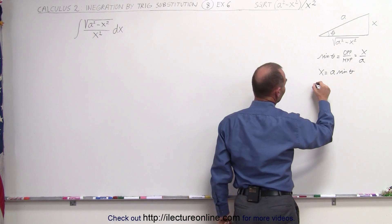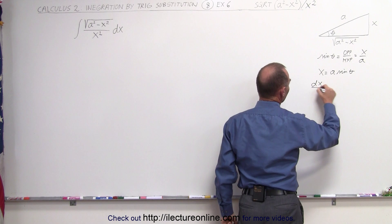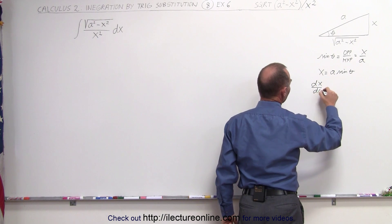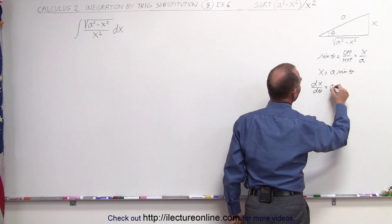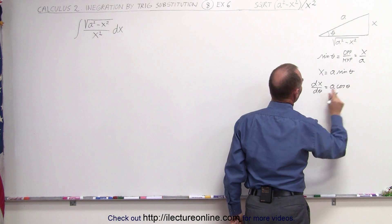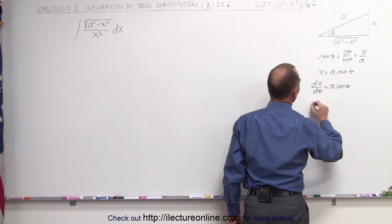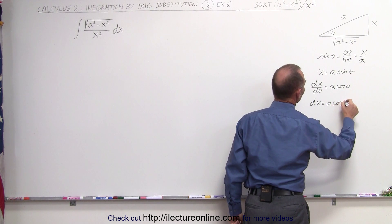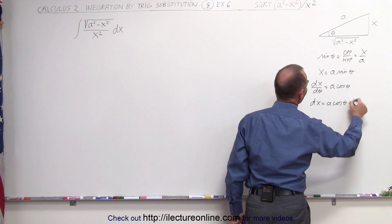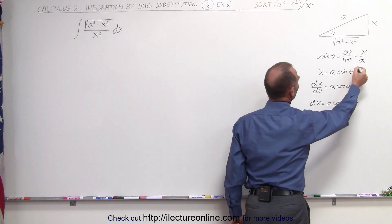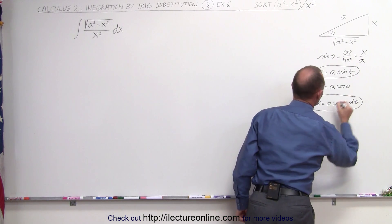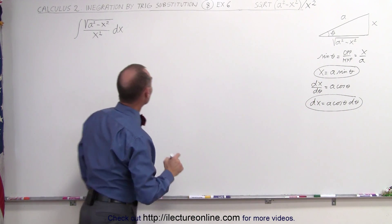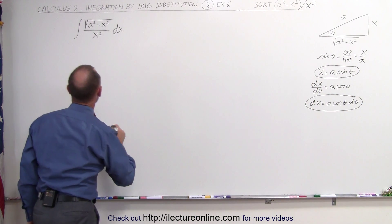We also have a dx, and so therefore dx divided by d theta is equal to a times the cosine of theta. Moving the d theta over, we can now write dx as being equal to a times the cosine of theta times d theta. Now we have the two substitutions that we can make to turn this integral into something we can actually integrate.